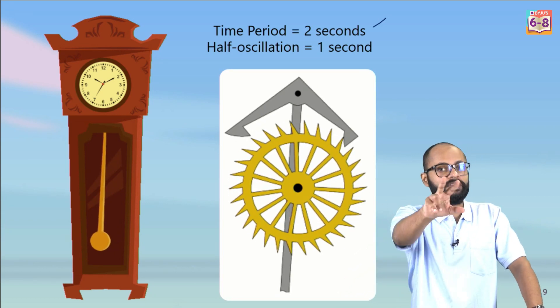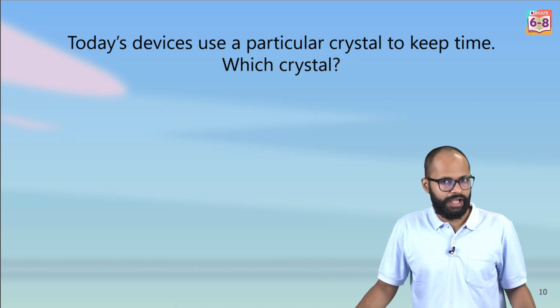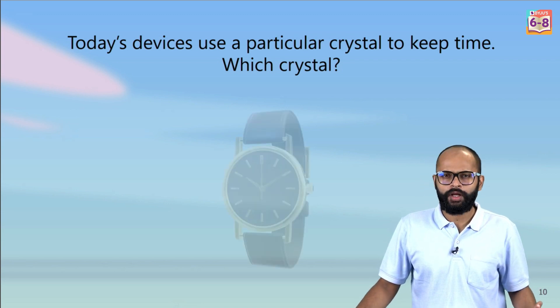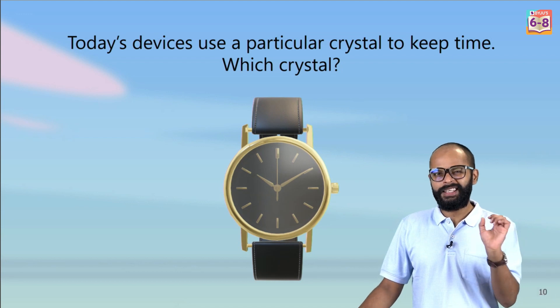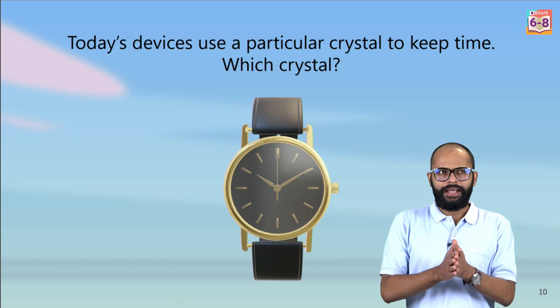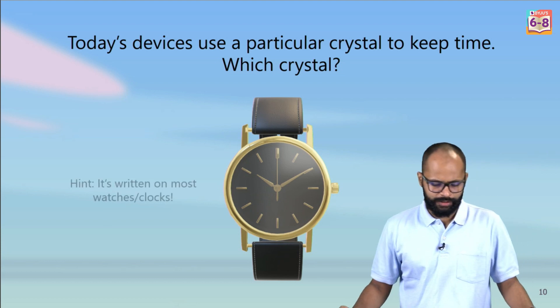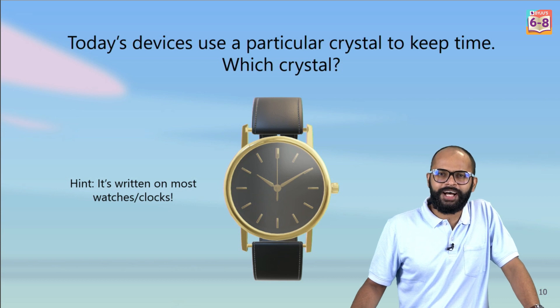So that's how these clocks used to work and that's why the pendulum doesn't stop. All right, now do we use them today? They are kind of obsolete nowadays. What do we have? Today's devices use a particular crystal to keep time. Which crystal? You want a hint? You know what the name of this crystal? I would say till now you might not know about this. It's there on a lot of watches. Go ahead, think about it and let me know what the answer is in the comment section.